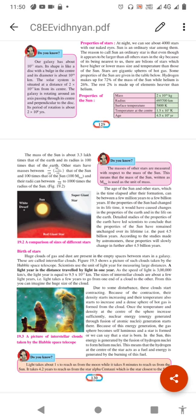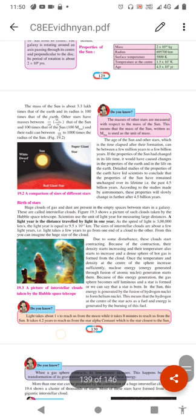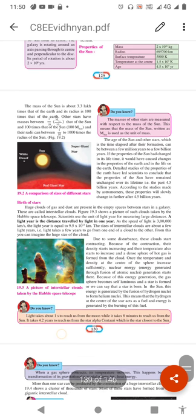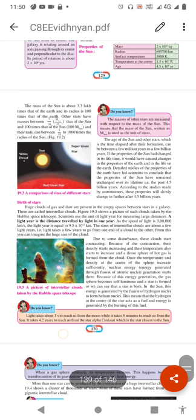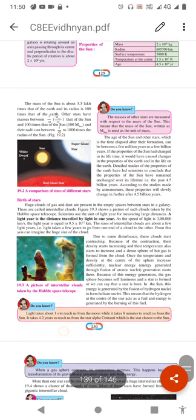Clouds of gas and dust are present in the empty space between stars in a galaxy. Just like in Earth's atmosphere, there are dust particles and gases, in a galaxy between stars there are also many dust particles, clouds, and gases.